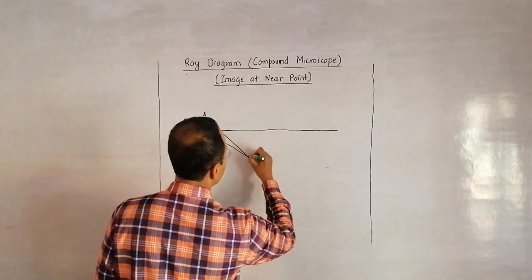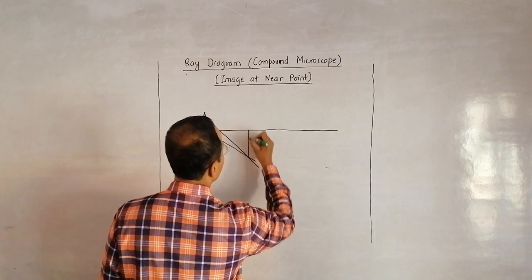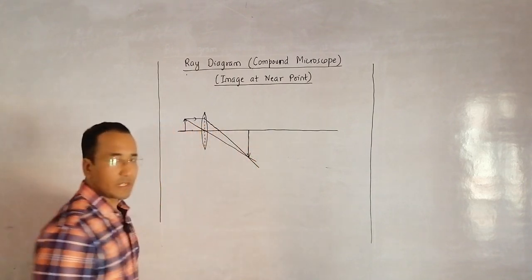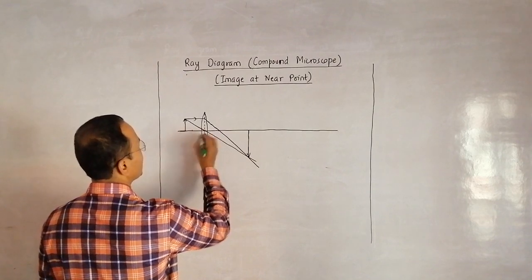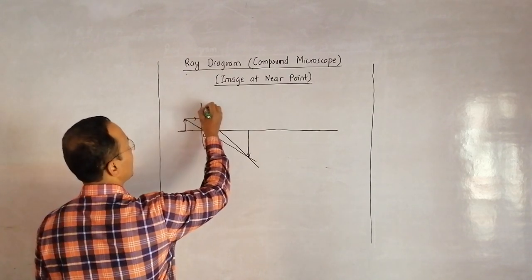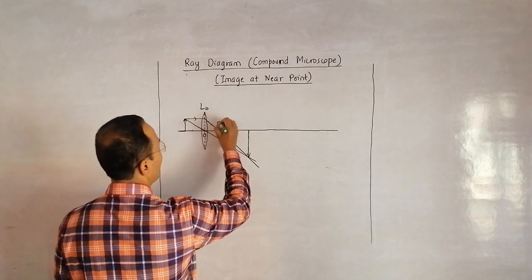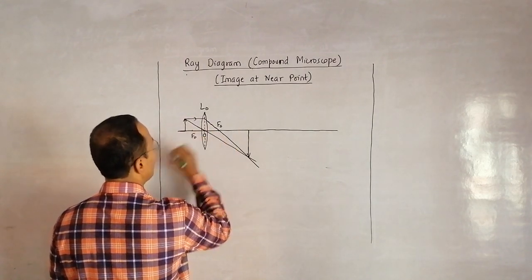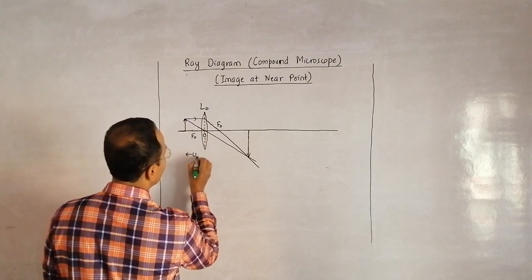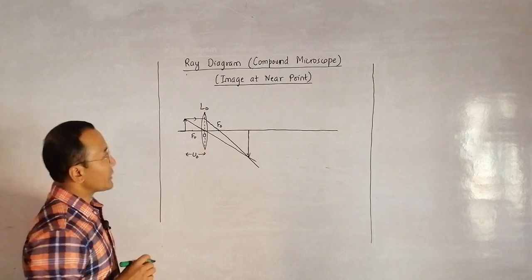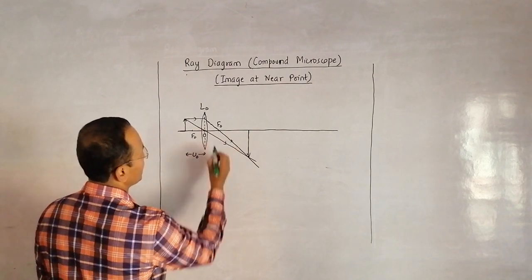As you can see, this is the first image formed by the first lens, which is the objective. Let us label the center of the objective as O, and this lens as L_O (lens objective). This point is F_O, and the object distance is U_O. The focal length is small f_O.